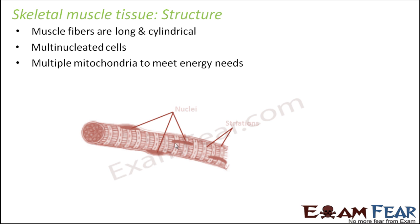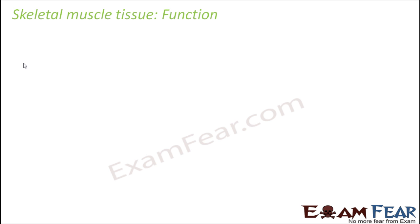If you look at the structure of the skeletal muscles, you can see the striations — the striped structures. Because of these striations they are called striated muscles. You can also see multiple nuclei. That covers the structure of skeletal muscle tissue.